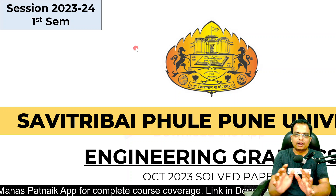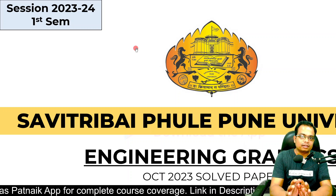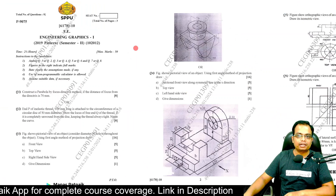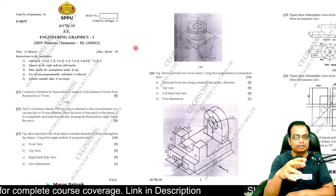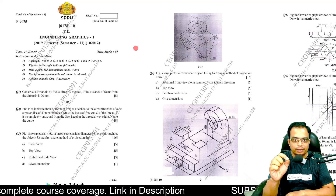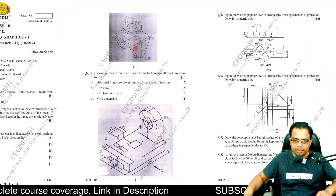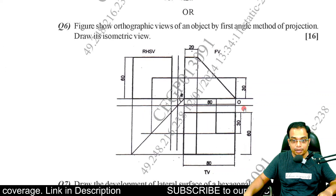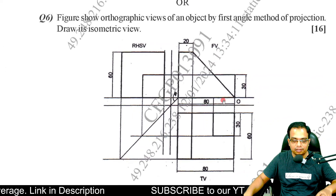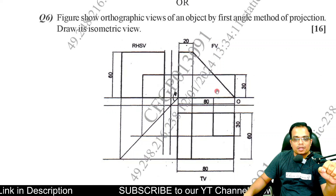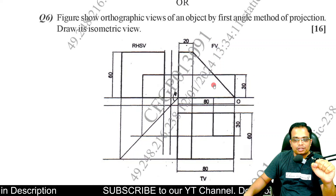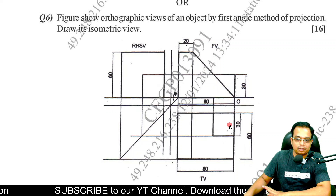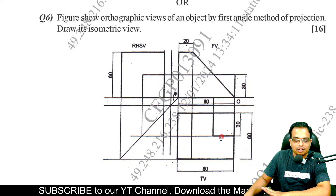Now we are on to question number six, which is also based on isometric projection. You basically need to make an isometric view. Here is the problem — the moment you look at this orthographic projection, you are bound to get confused because there are so many lines.